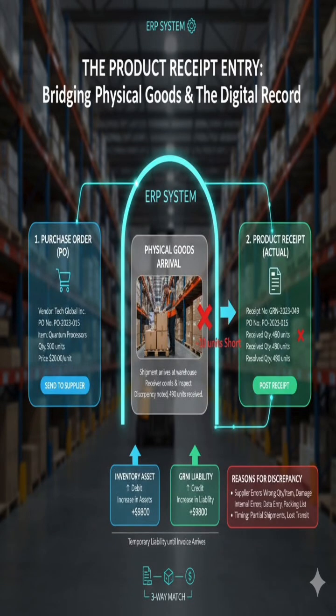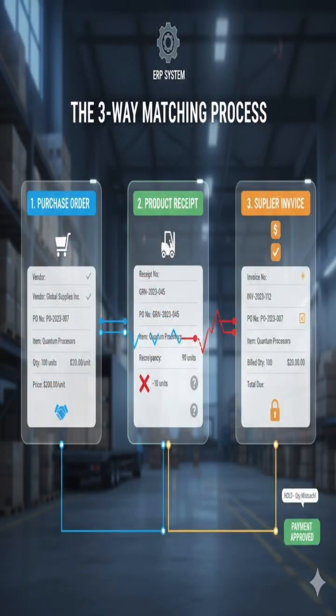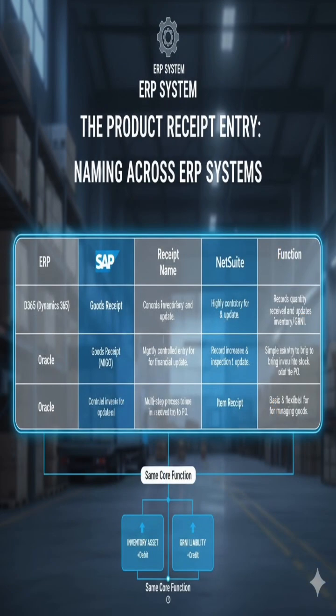What is the product receipt entry in ERP, and if there is a difference, explain the reasons. The product receipt entry in an ERP system is a critical transaction that formally records the physical arrival of goods ordered from a supplier. It converts the physical movement of inventory into a financial and inventory management record, and is the second step in the standard three-way matching process. The specific name of the entry varies slightly by ERP system, but its function is consistent.